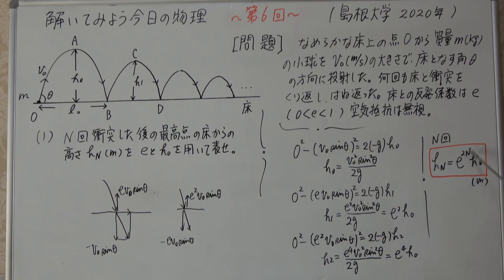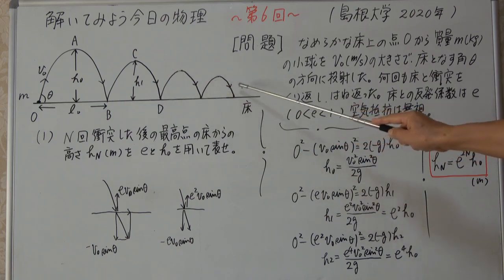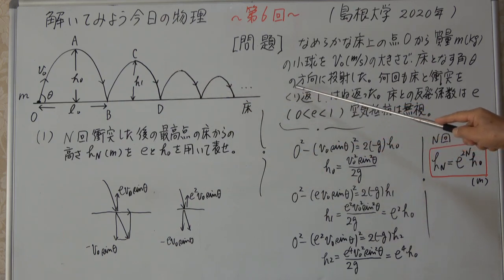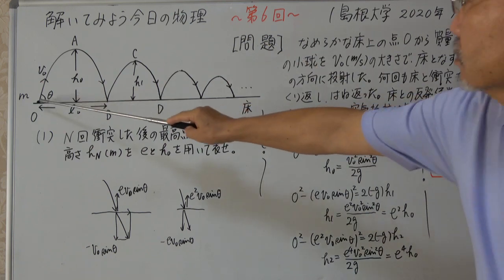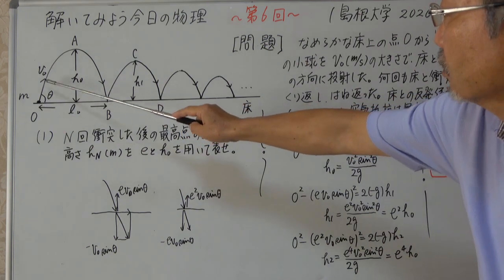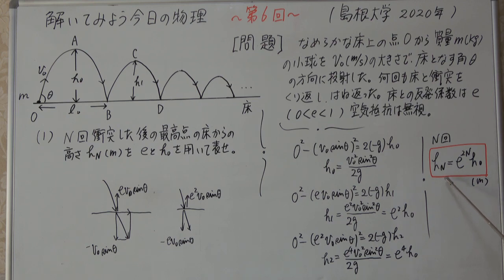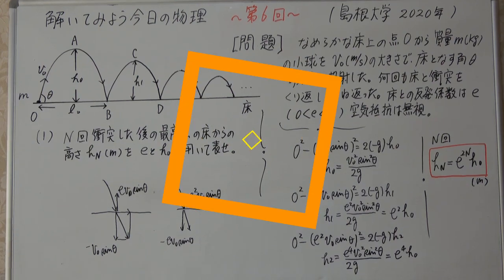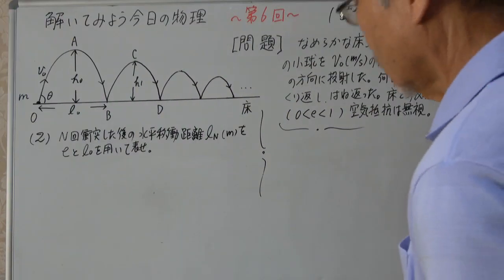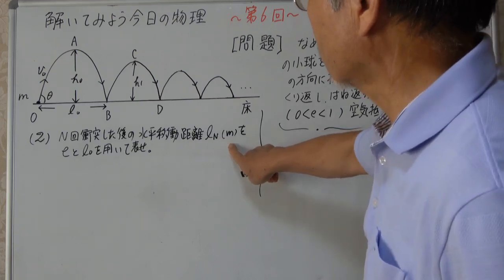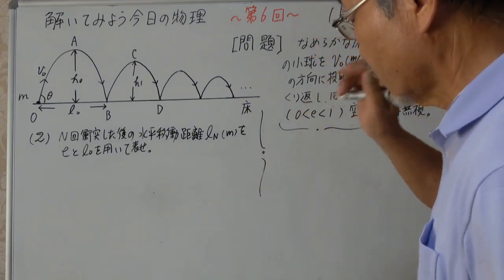N回衝突後の最高点の高さはE^(2n)H0です。Eが1より小さいですから、Nが大きくなると0に近づきます。Nが無限大になるとどんどん高さが低くなり、最終的には水平方向のV0cosθの速度で等速直線運動になります。2番の問題、LnをEとL0を用いて表せを解きます。